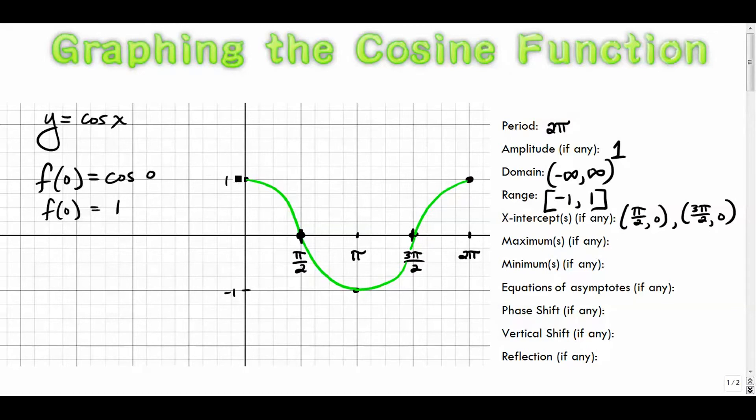The maximums, of course, just in this particular cycle are zero comma one and two pi comma one. And they would, again, keep repeating themselves. The minimum is the smallest value. It's pi, negative one. It's down here.